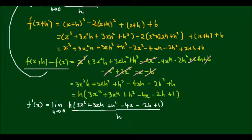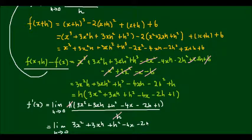And here the h's will cancel, so I'm left with the limit as h approaches 0 of 3x squared plus 3xh plus h squared minus 4x minus 2h plus 1.